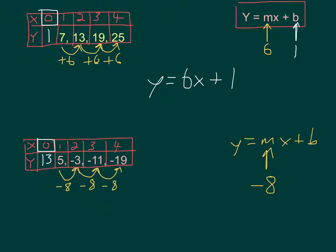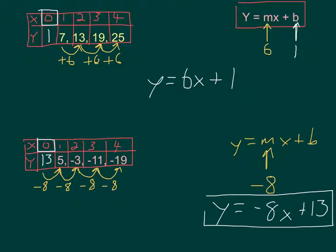13 minus 8 is 5. So I know my formula is going to be y equals minus 8x plus 13. And those are my formulas for my arithmetic sequence of numbers.